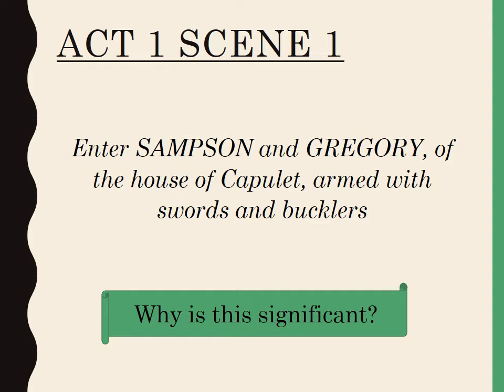This scene comes directly after the prologue, and the action starts with the stage direction: 'Enter Samson and Gregory of the House of Capulet, armed with swords and bucklers.' The words I think you should zoom in on are 'swords and bucklers,' because straight away we're presented with the theme of violence.